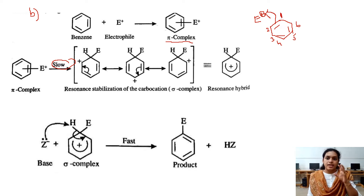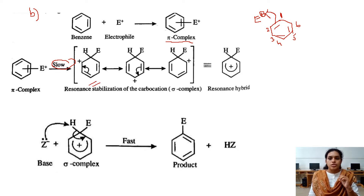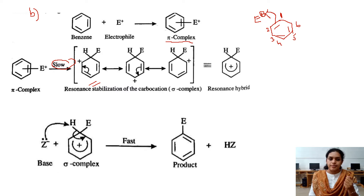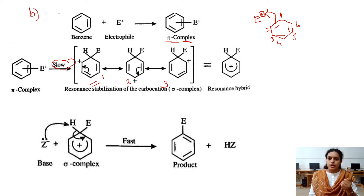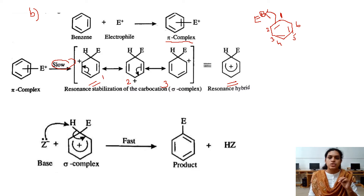When the electrophile gets directly attached to the first carbon atom, a sigma complex (arenium ion) is obtained. This sigma complex is stabilized due to resonance. We can write three resonance structures, and the resonance hybrid shows the positive charge spread across positions 2, 4, and 6 of the ring.